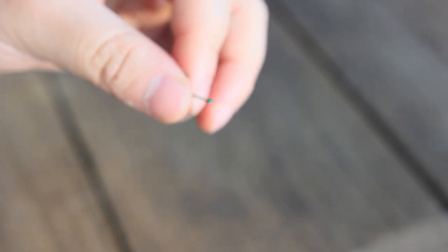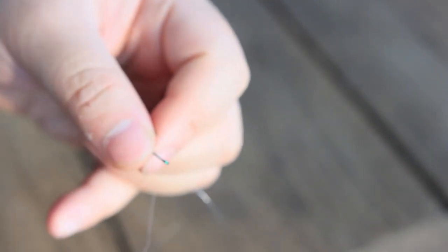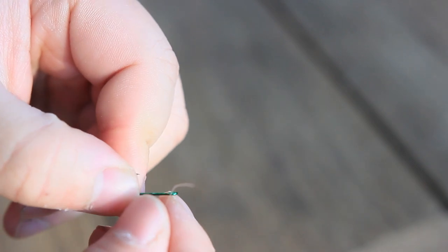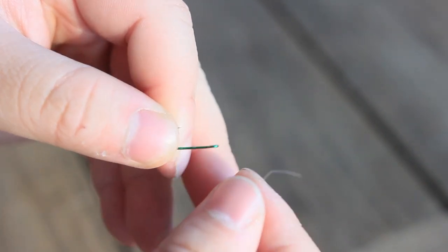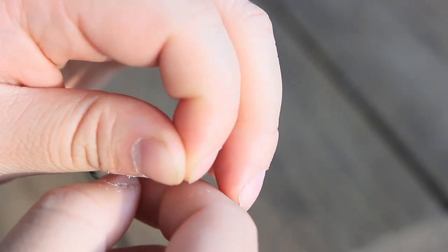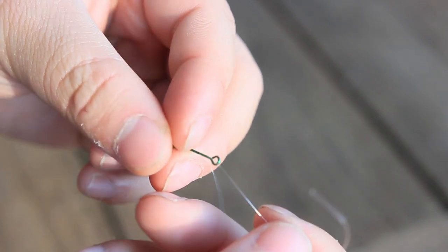So basically, simple knot - I loop it through the eye of the hook. This can be fiddly sometimes because these hooks sometimes have a gap and your line actually falls through. So make sure to go through them with pliers before if you want to save time.